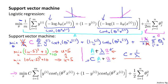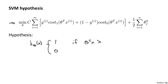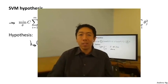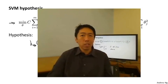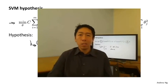That gives us our overall optimization objective function for the support vector machine. Unlike logistic regression, the SVM doesn't output a probability. Instead, it minimizes this cost function to get parameters theta, and directly predicts y equals 1 if theta transpose x is greater than or equal to 0, and predicts 0 otherwise. In the next few videos, let's try to get better intuition about what this optimization objective leads to, what hypotheses a SVM will learn, and how to modify this to learn complex nonlinear functions.